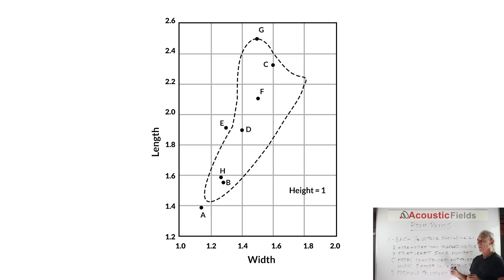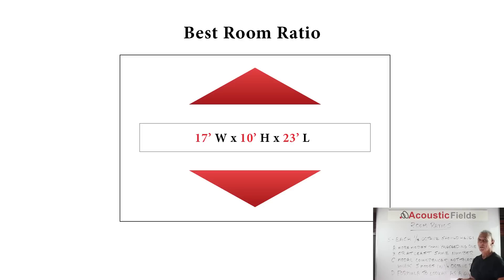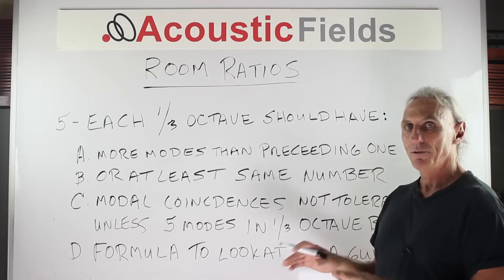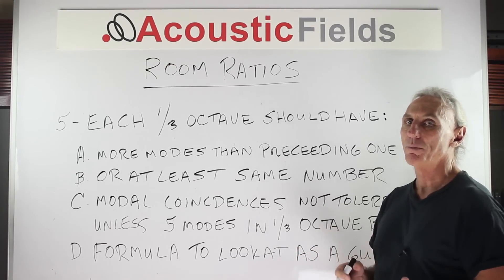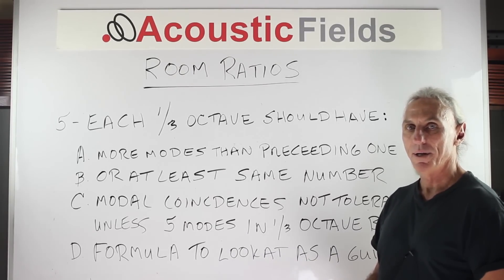Also realize that anything below this dimension requires a different approach. A good break point for room dimensions is 17 feet wide, 10 to 11 feet tall, and 23 feet long. Anything below that size means we're going to have to treat low-frequency pressure differently than if the room is above that size, where the concentration shifts to reverberation times. So use the Bonella graph, plug your room dimensions in, and look at 17 by 10-11 by 23 as a break point.